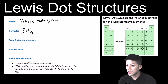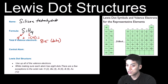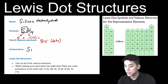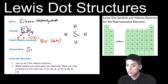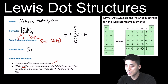Silicon tetrahydride is SiH₄. Silicon has four valence electrons, and hydrogen has one — with four hydrogens, that's four more. In total we have eight electrons, or eight dots, to work with. The central atom will be silicon since it's the leading and only non-hydrogen element. I'll place silicon in the center surrounded by four hydrogens, then place dots bonding silicon to each hydrogen. That uses up all eight dots, satisfying the first condition.